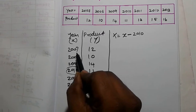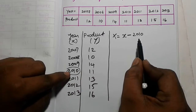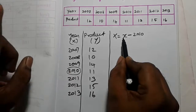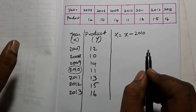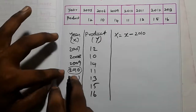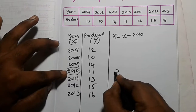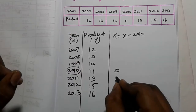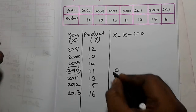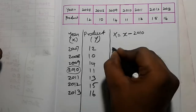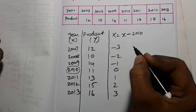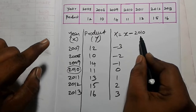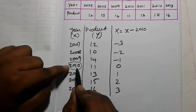Calculate: 2007 minus 2010 equals minus 3; 2008 minus 2010 equals minus 2. Continue up to the middle year. The middle year gets the value 0. Capital X equals small x minus the middle year. In the middle year we have 0.